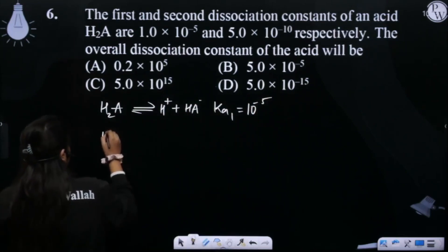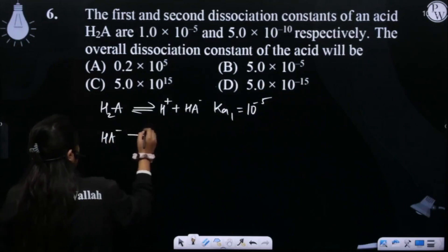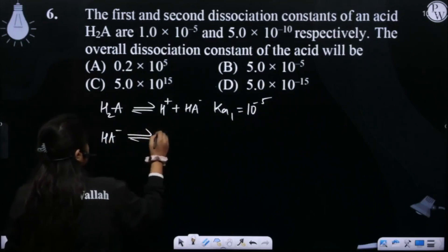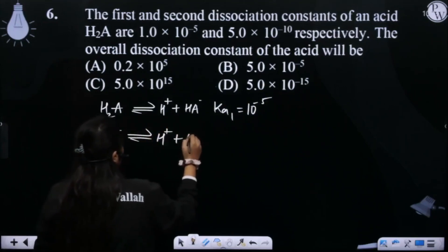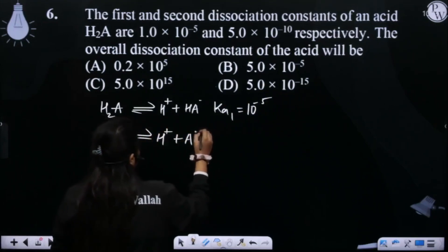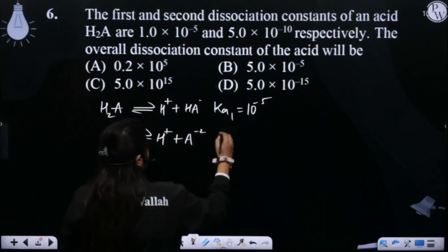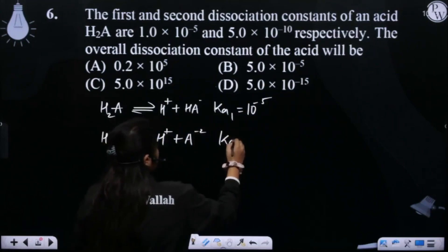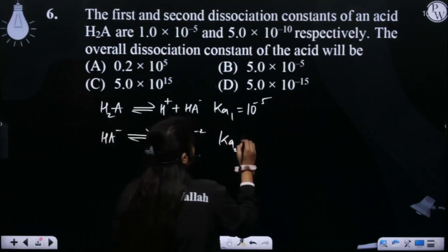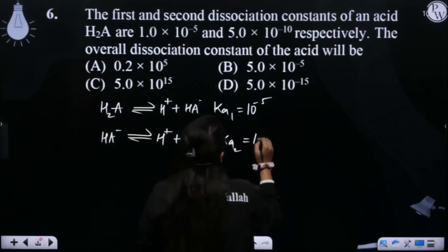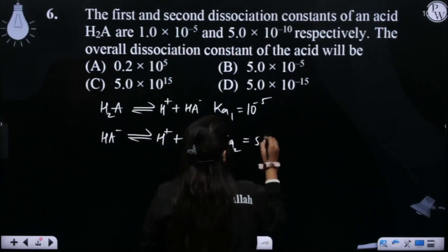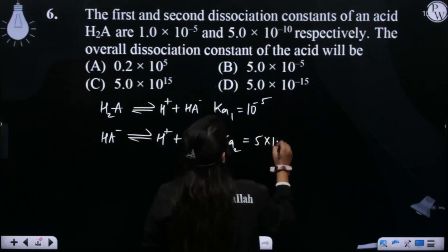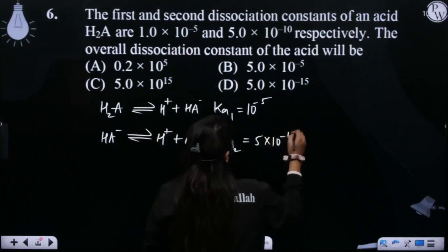Now, HA⁻ in the second step gives a second H⁺, producing H⁺ and A²⁻. The dissociation constant for this step is 10 to the power minus 5 into 10 to the power minus 10.